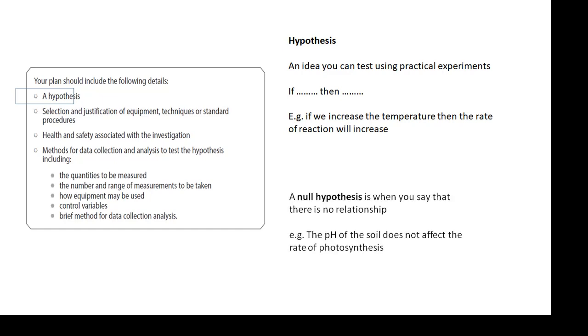It might be a null hypothesis. This is when you say that there isn't a relationship. For example, the pH of the soil does not affect the rate of photosynthesis. That would be a null hypothesis.